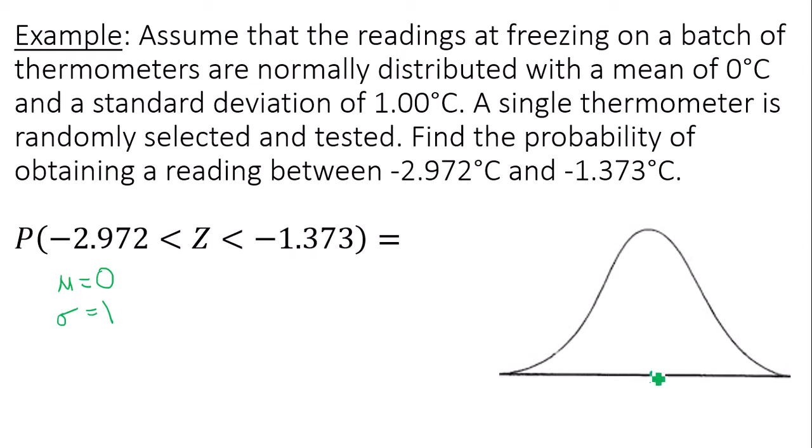So in the dead center of my bell curve, I plot zero as my mean. Then I need to label data values of negative 2.972, that'll be to the left of zero over here, and negative 1.373. That'll also be to the left of zero. As long as you draw both of these values to the left of zero, your picture is accurate.